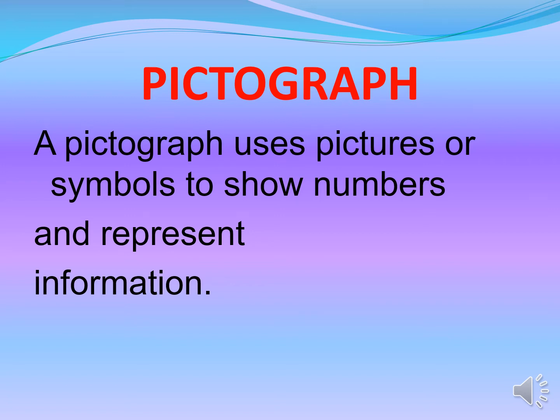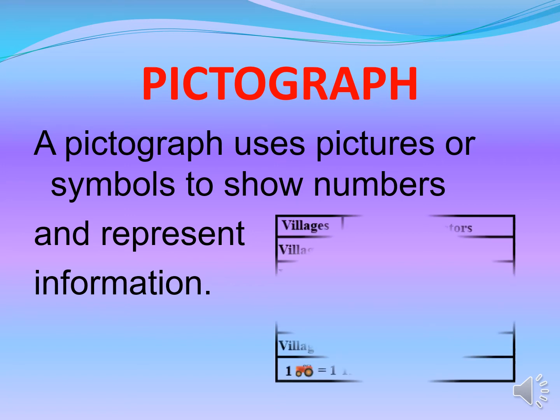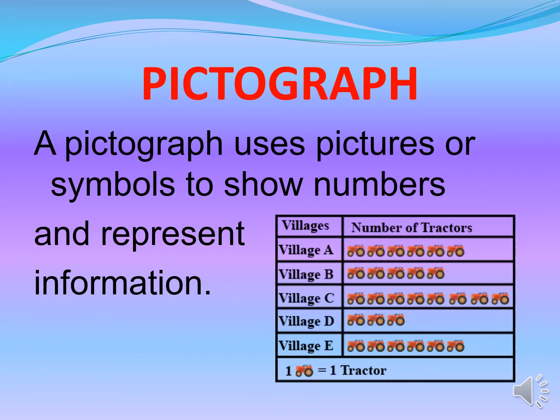Let us see an example. In this pictograph, we can see the names of the villages — village A, B, C, D, and E — and the number of tractors in each village. Here, the picture of a tractor is used to represent information.